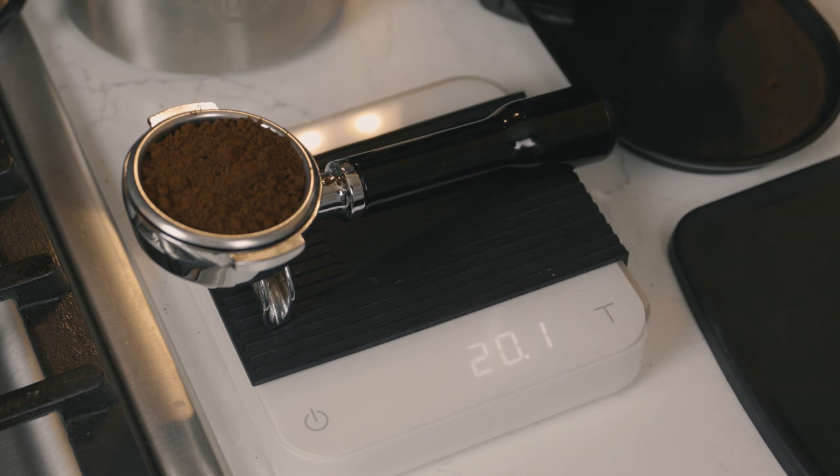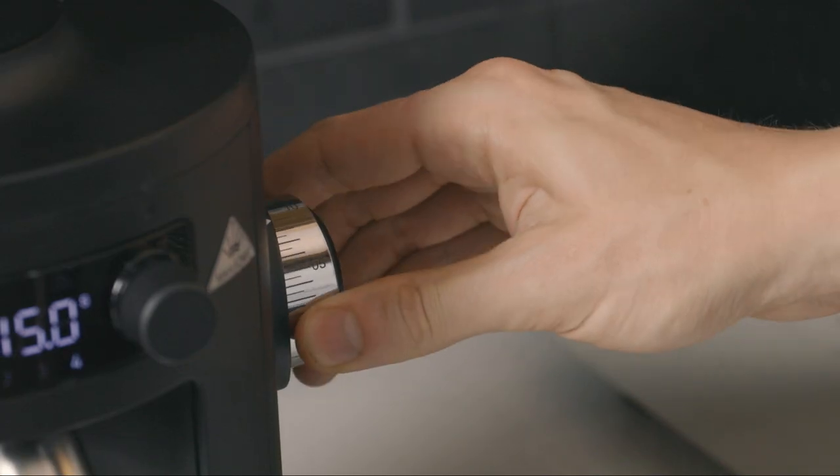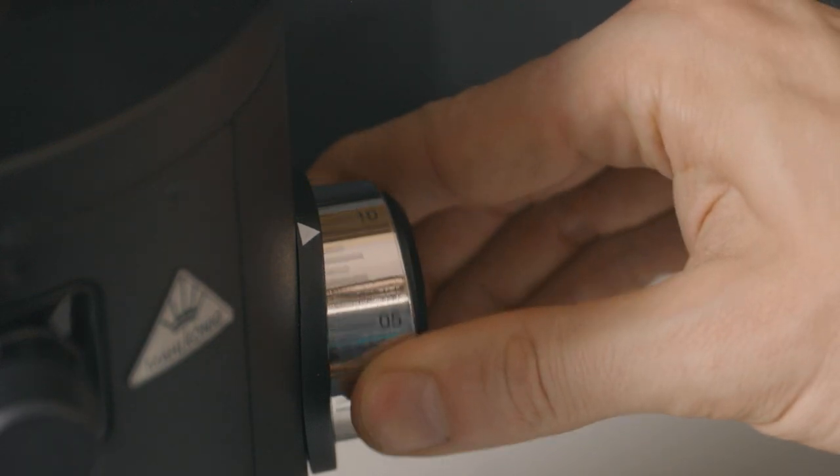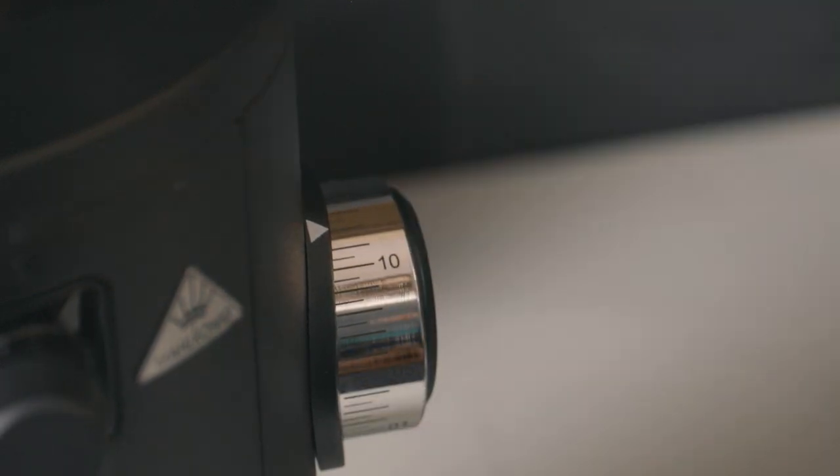To adjust the grind size finer, move the dial clockwise towards smaller numbers. To move coarser, move counterclockwise towards large numbers.